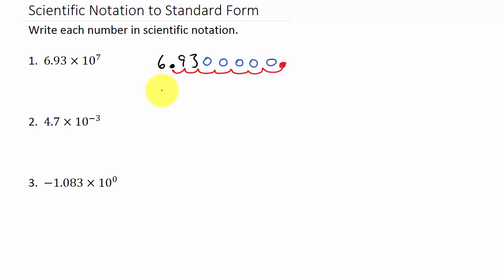And so, the number would be 6, 9, 3, and then we've got 1, 2, 3, 4, 5 zeros. 1, 2, 3, 4, 5 zeros. And then 1, 2, 3. 1, 2, 3.